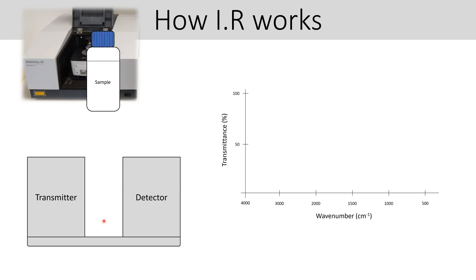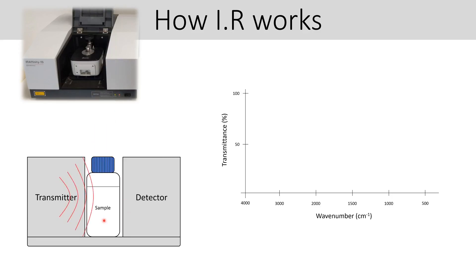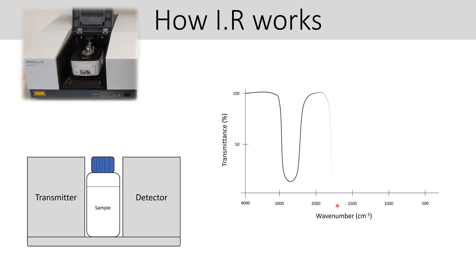Now let's imagine if we put a sample in there. That sample will contain compounds with specific covalent bonds. Some of that infrared radiation's frequencies would have been absorbed by the sample and therefore would have never reached the detector. So if we look at our transmittance response, we can see that frequencies in the 2,500 to 3,000 range were absorbed by the sample.